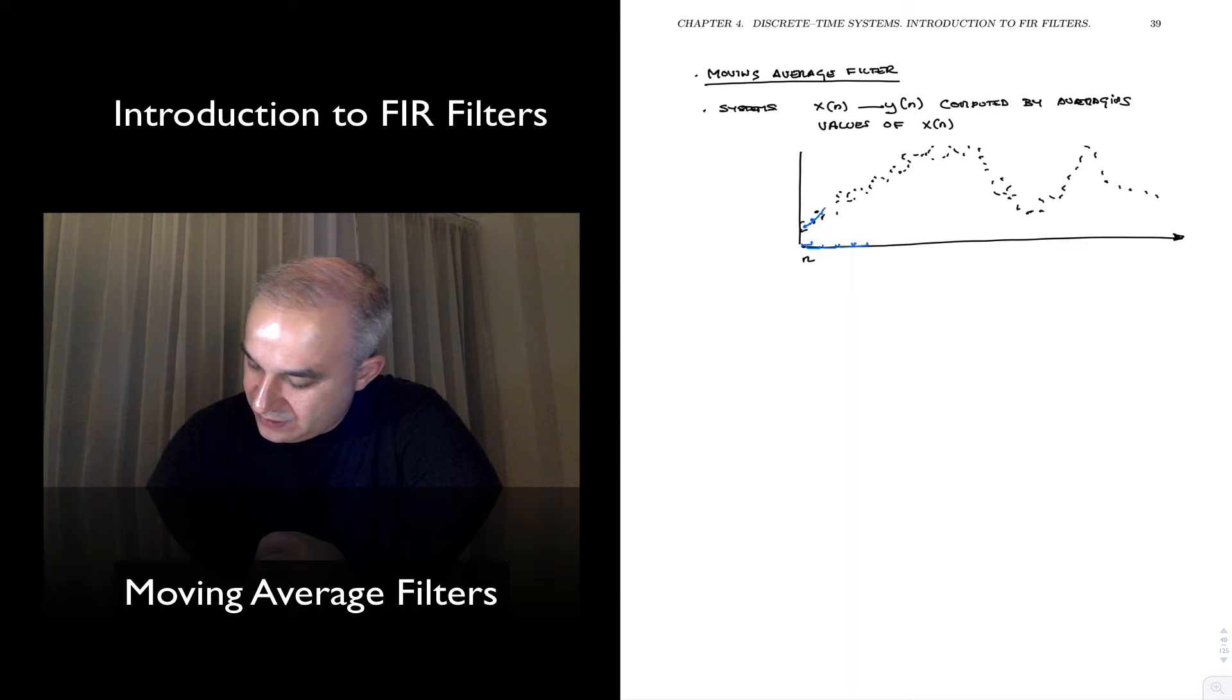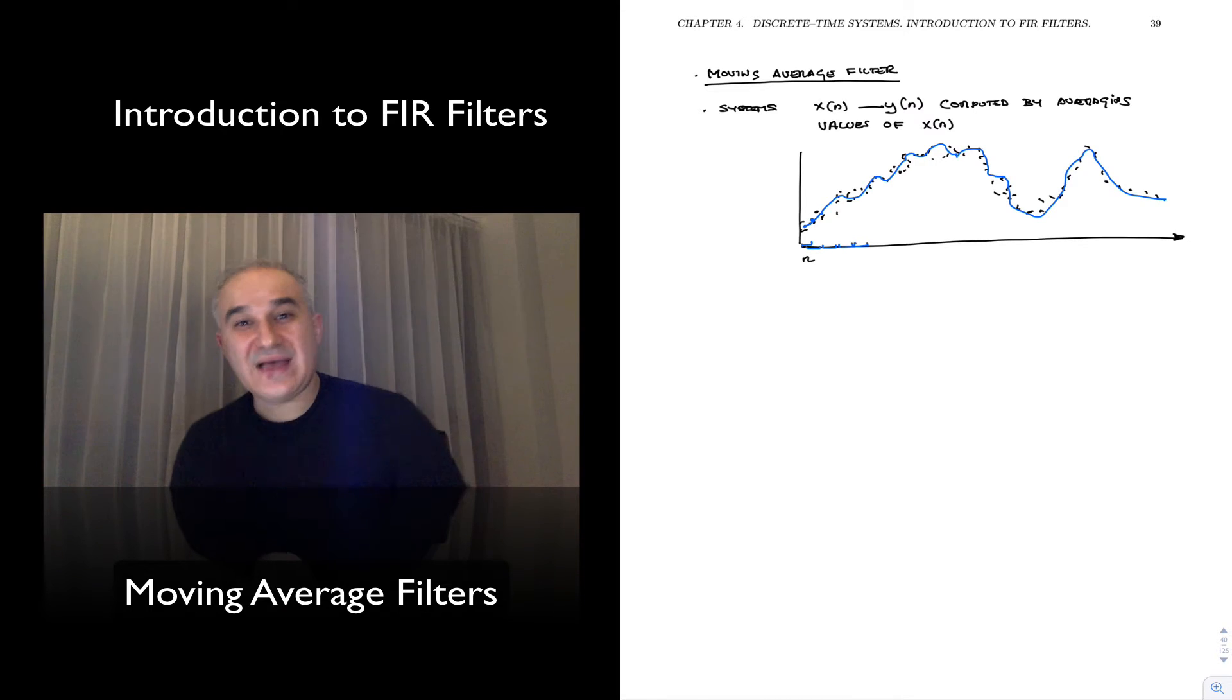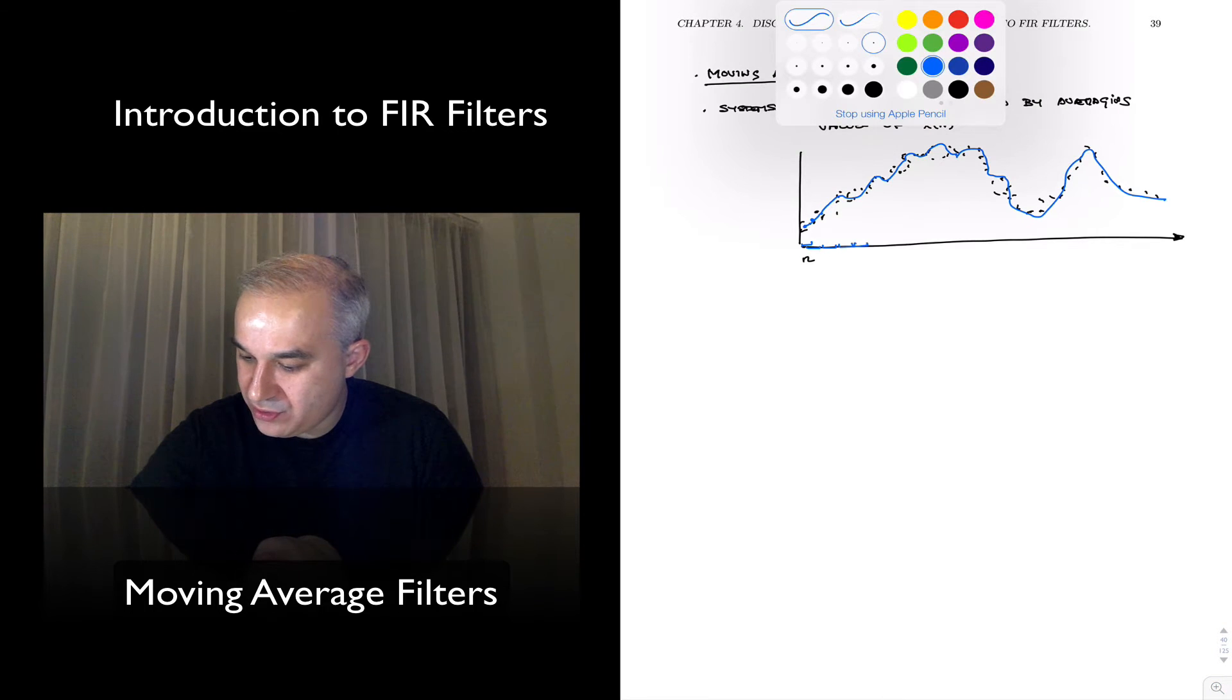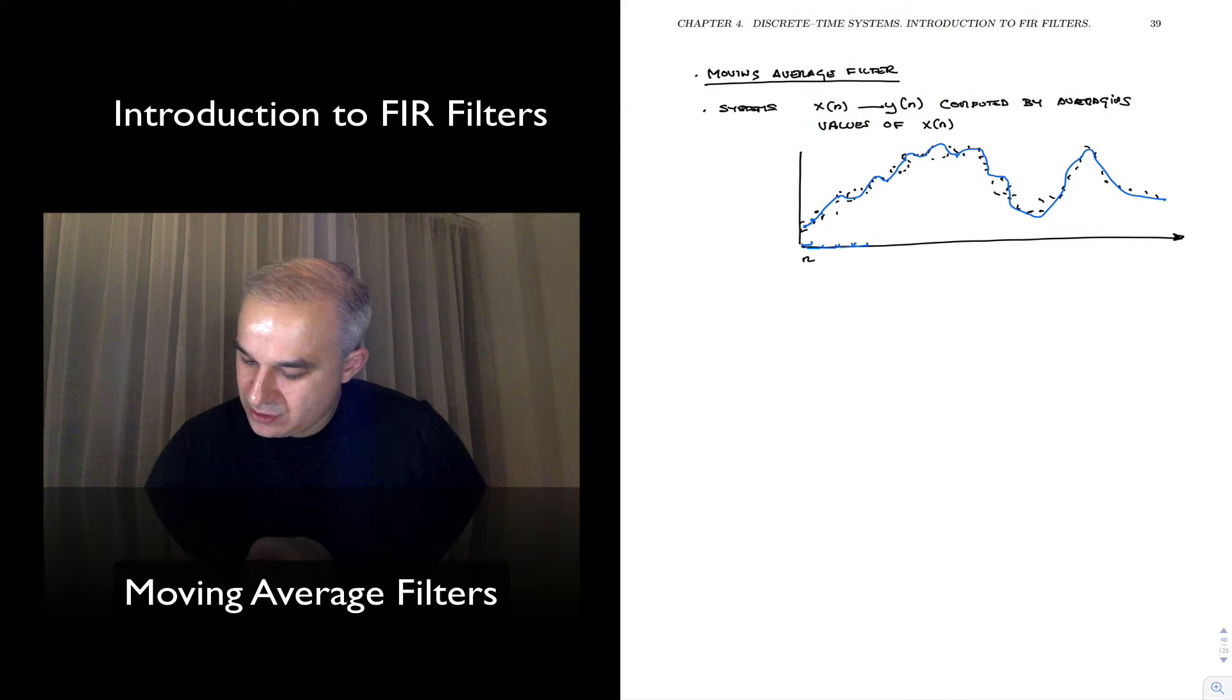What you will end up with is something that maybe looks something like this, a smooth signal, an average version. If we average more, maybe because we are taking five points or ten points, a longer window, then it may be even smoother.